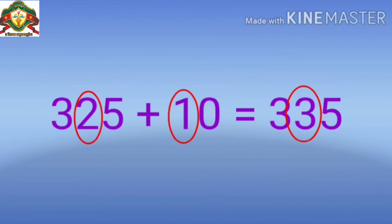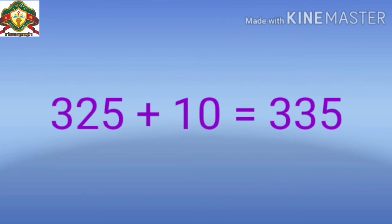Means कि किसी भी number में जब हम 10 plus करते हैं, जो digit है उसमें 10th place plus करते हैं, वो increase हो जाएगा। Is it clear? देखिए example — 325 plus 10, so the answer is 335.